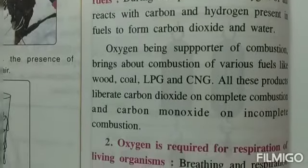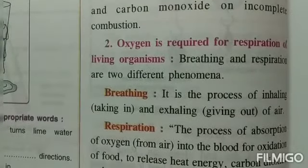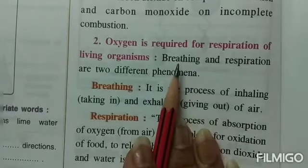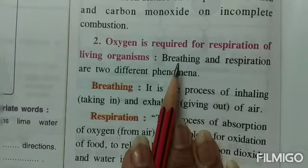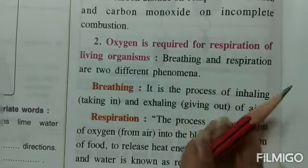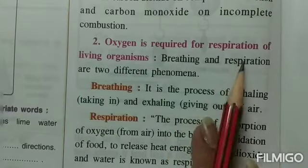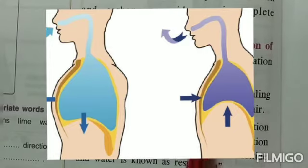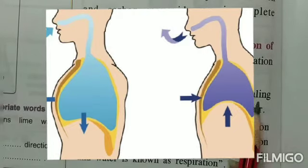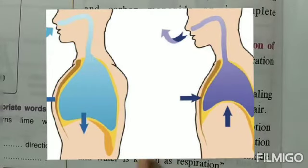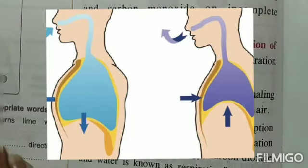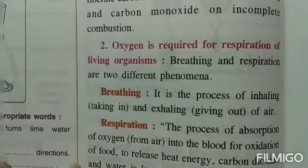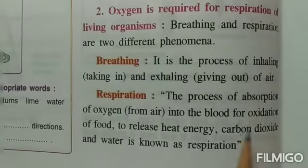Oxygen is required for respiration of living organisms. Breathing — taking in of air and giving out of air, taking in oxygen and giving out carbon dioxide — and respiration are two different phenomena. Respiration is how the oxygen inhaled into our body is used for releasing energy from food. Breathing is the process of inhaling and exhaling air. Respiration is the process of absorption of oxygen into the blood for oxidation of food, which means combining with oxygen to release heat energy, carbon dioxide, and water.